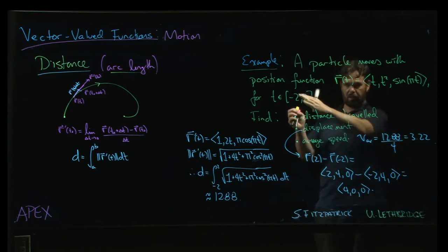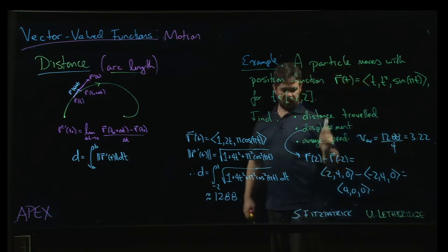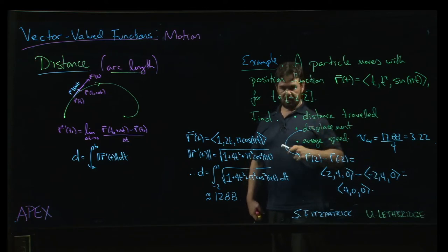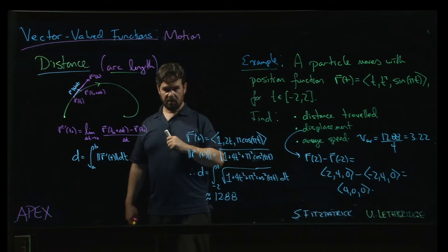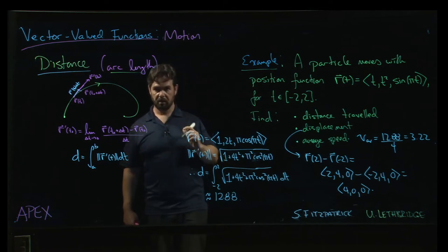The sine function here is going to cause it to move back and forth. So it's not like you're just following a straight line path. We're taking a much more meandering path, and that's why the distance traveled is much higher than the magnitude of the displacement.